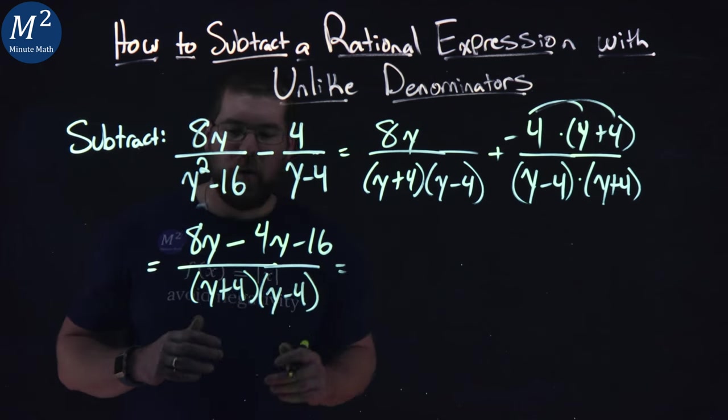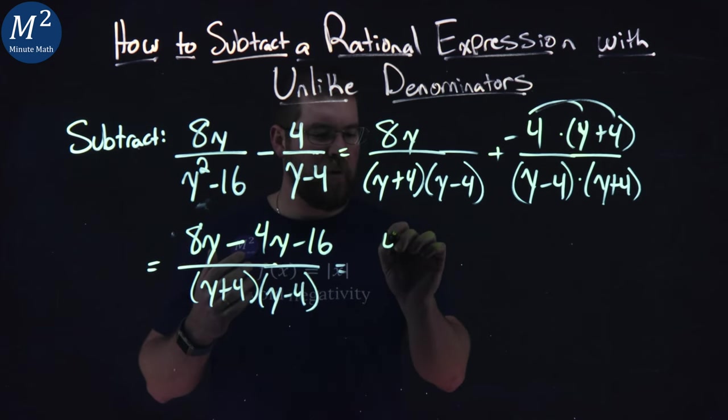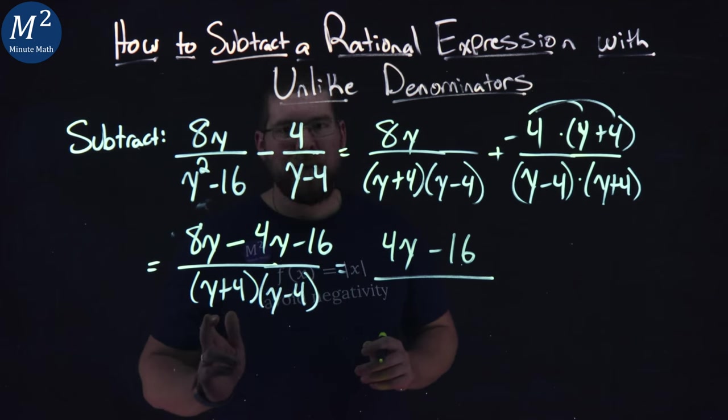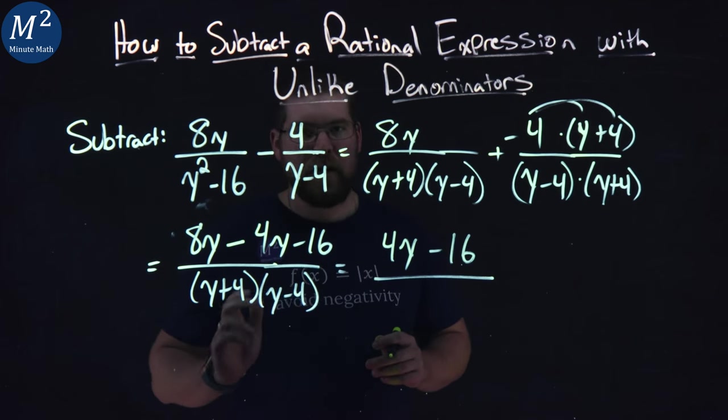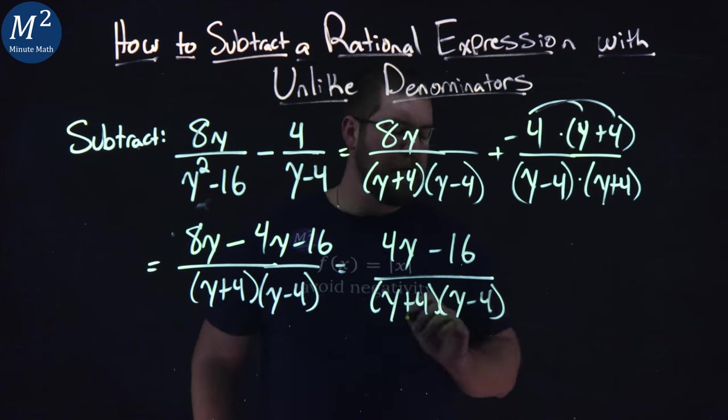All right, keep on going, combine our like terms. 8y minus 4y is 4y in the numerator, minus 16. Don't multiply this out - keep that separate, factored, and it might cancel. Y plus 4, y minus 4 here.